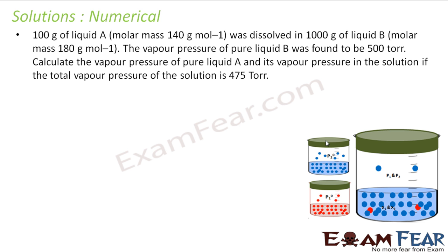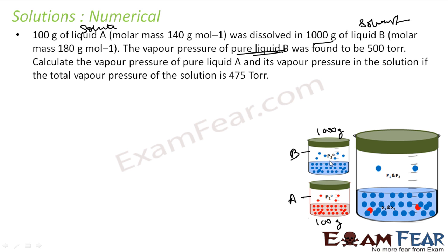The next question: 100 grams of liquid A is dissolved in 1000 grams of liquid B. A is the solute and B is the solvent. The vapor pressure of pure liquid B is found to be 500 Torr. We need to calculate the vapor pressure of pure liquid A and its vapor pressure in the solution, given that the total vapor pressure is 475 Torr. Note that both liquids are volatile.